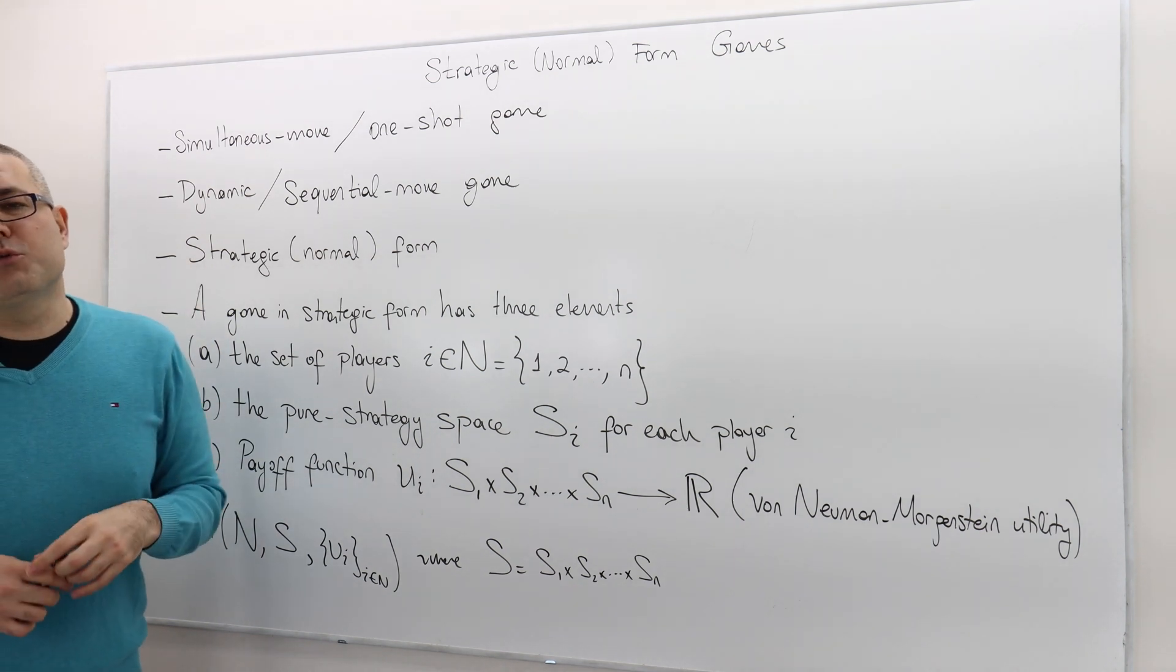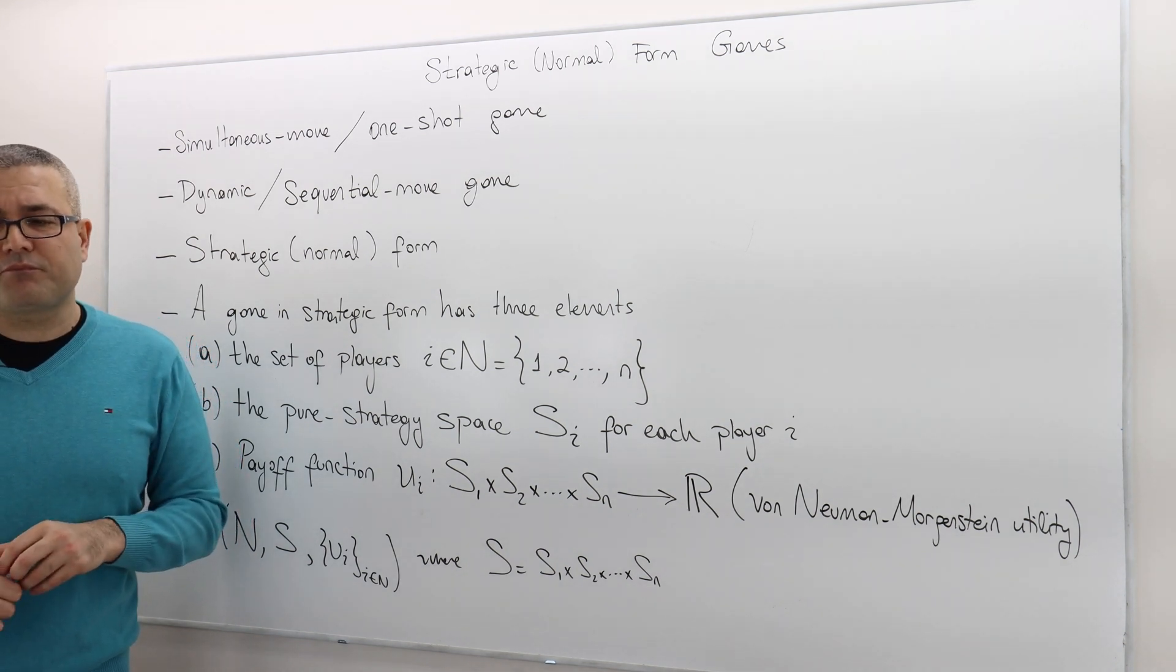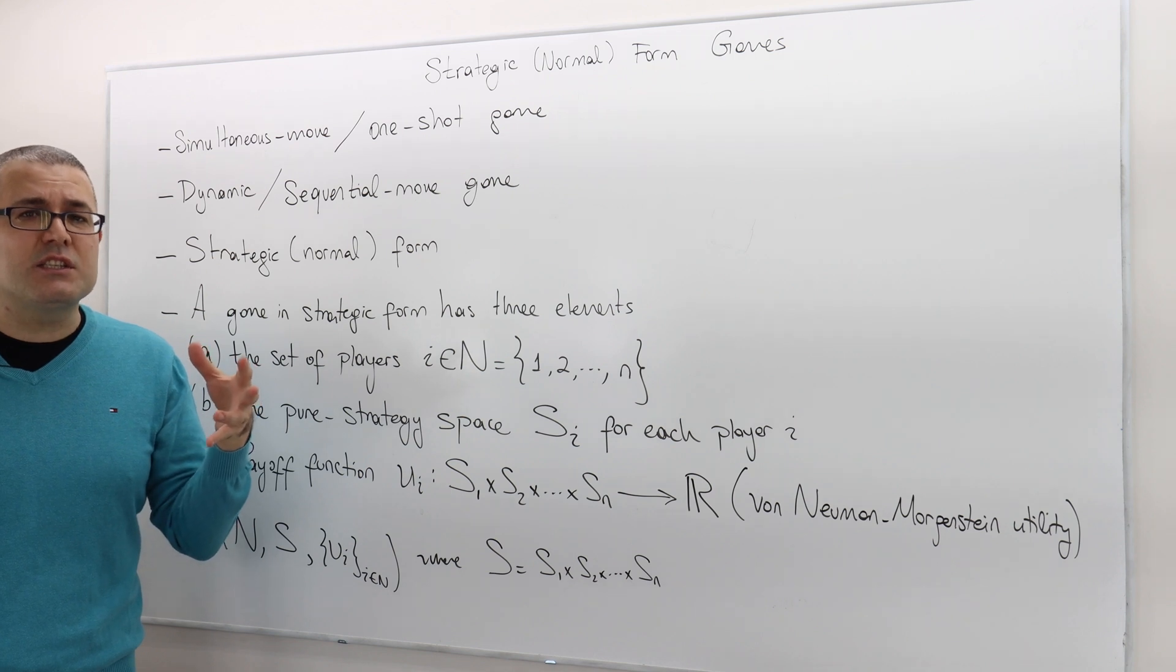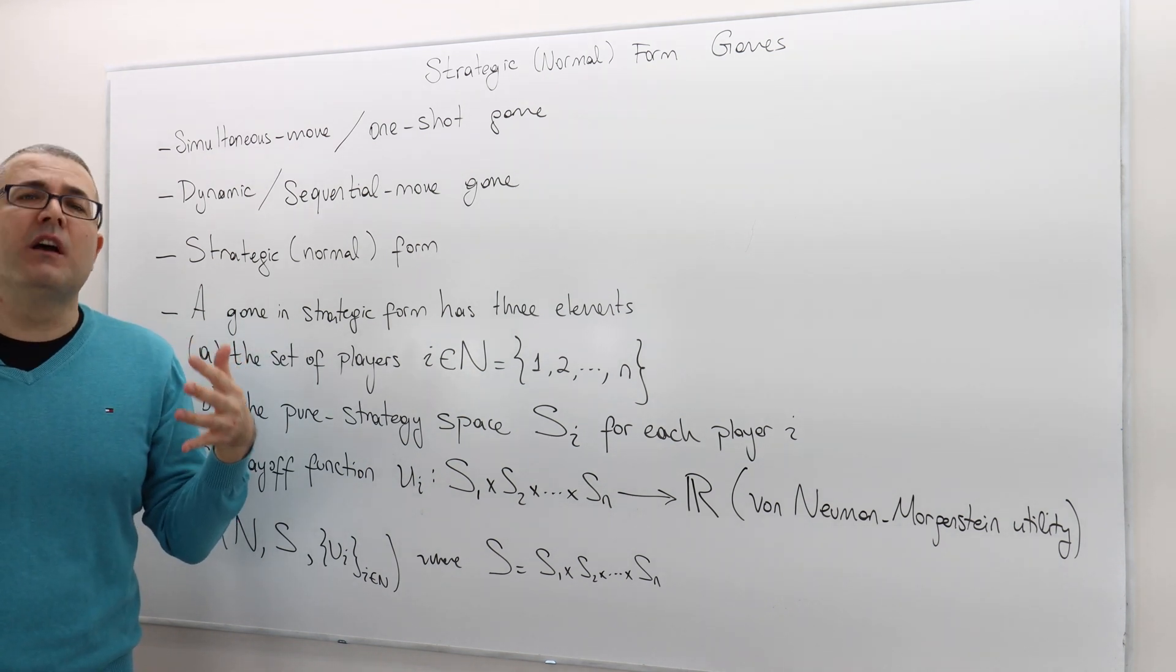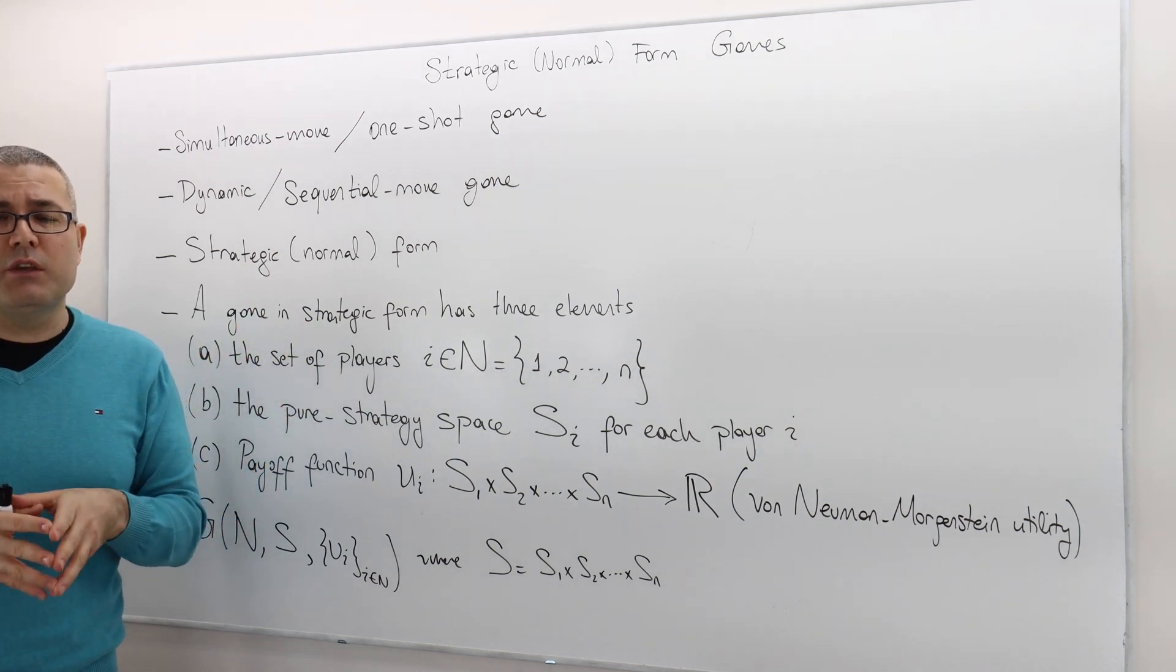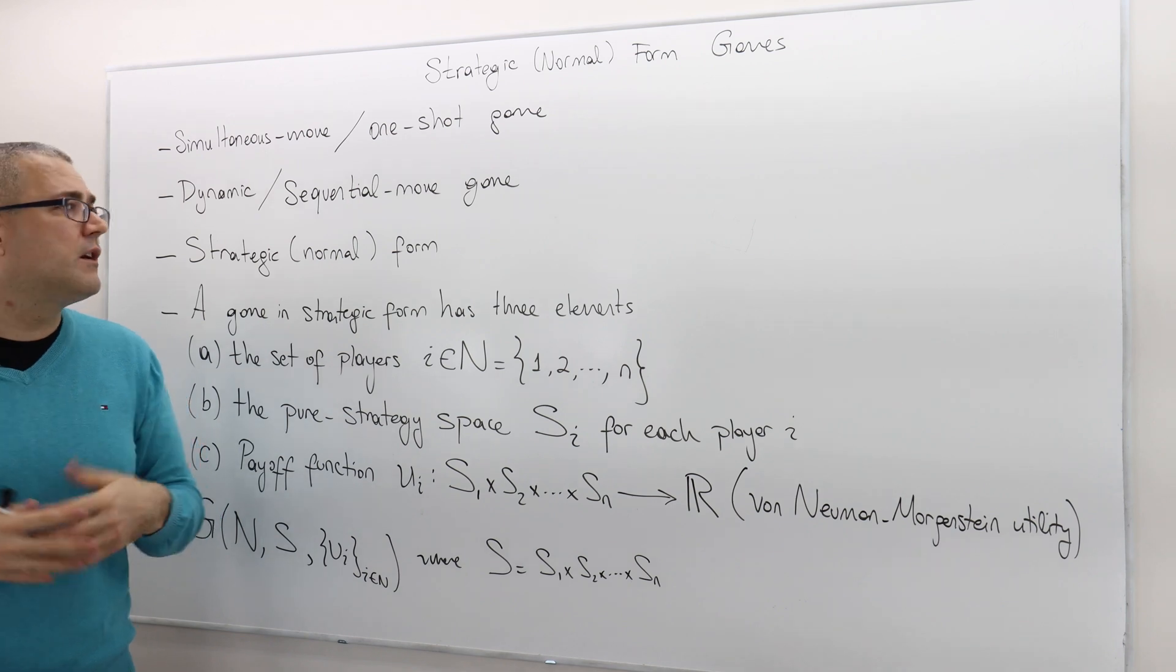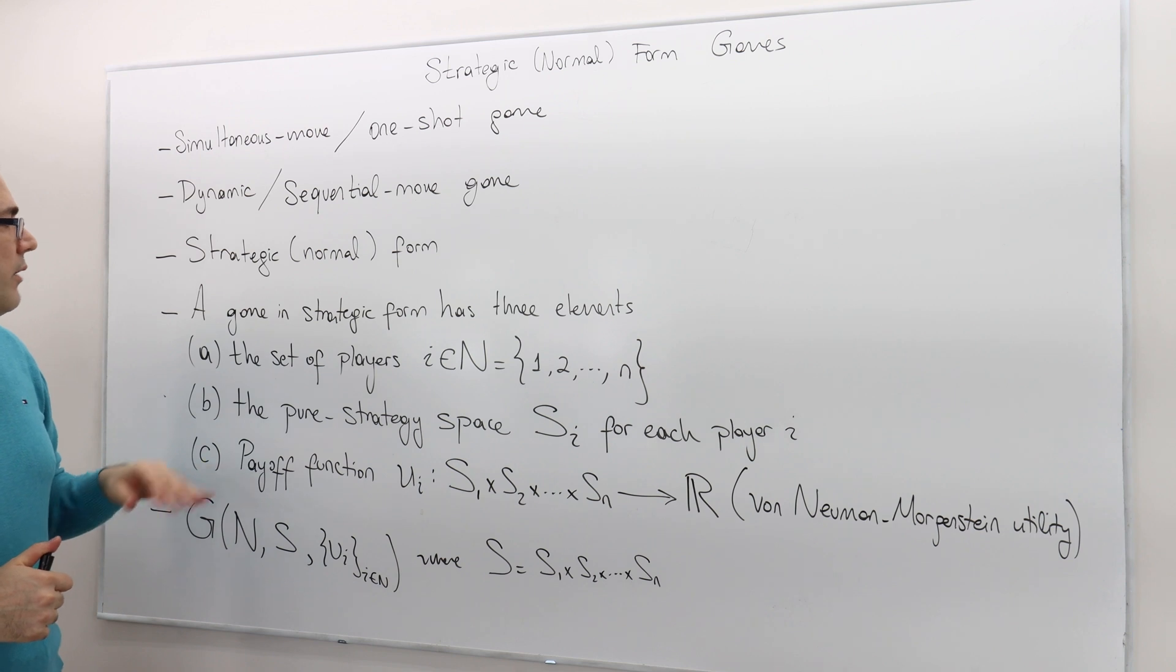Question is, why do we use strategic or normal form representation? The answer is simple. Strategic form representation basically tells us the relationship between the strategies of all the players and what payoffs they're going to achieve once they all play those strategies. This is exactly why we use the metrics form, because it's the simplest representation, how we relate strategies with payoffs. So this is what a strategic form is used for.